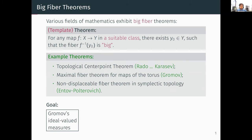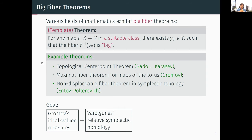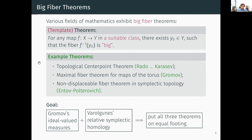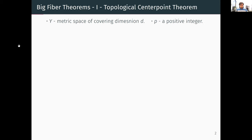The main goal of this project is to take Gromov's notion of ideal valued measures, which was used in proving the first two theorems, and combine it with the relative symplectic homology due to Volgunes, in order to put all three theorems on equal footing. Please note I cannot monitor the chat while viewing slides, so if there are questions please speak up or someone will monitor the chat.